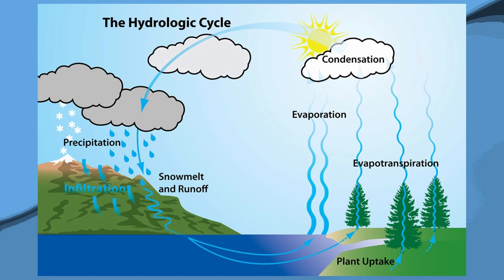Starting at the ocean: evaporation creates water in gas form, and once it reaches the atmosphere where temperatures cool, it condenses into liquid and creates clouds. As those clouds travel and gain more moisture through condensation, they eventually become heavy enough to precipitate, coming down as either rain or snow. Snow creates ice that melts, and both rain and snowmelt become runoff flowing back into the ocean. Infiltration can also occur during precipitation or snowmelt — typically during winter, your springs will be very pretty. Evapotranspiration combines plants transpiring water from their roots into the atmosphere, eventually forming clouds.